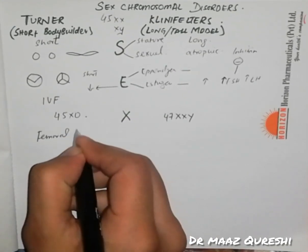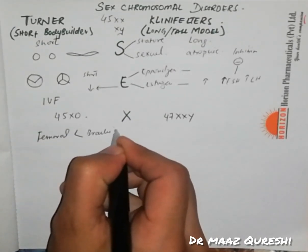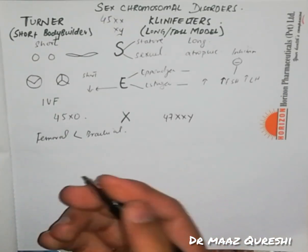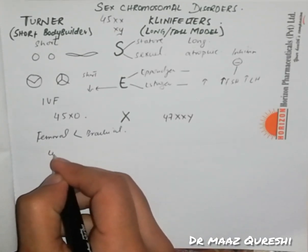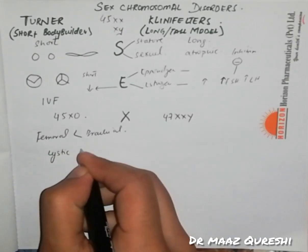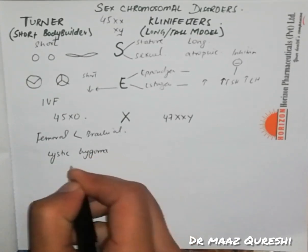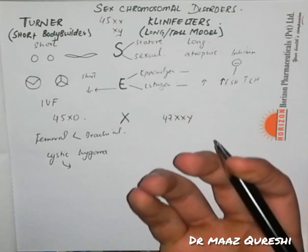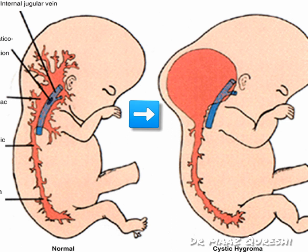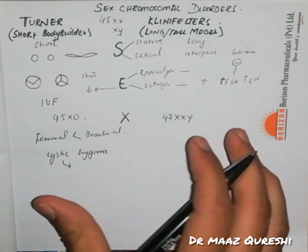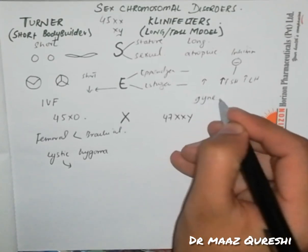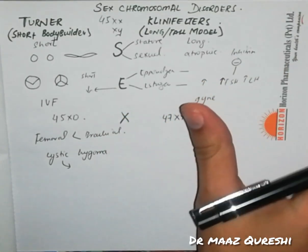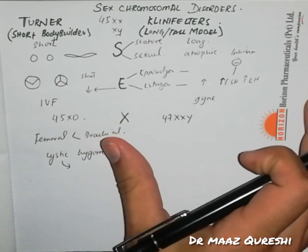The femoral pulse is less than the brachial pulse. Clinically, Turner's patients also have cystic hygroma, which involves enlarged lymph nodes in the head and neck region. On the Klinefelter's side, there is gynecomastia and wide nipples — pictures will be shown in the video.